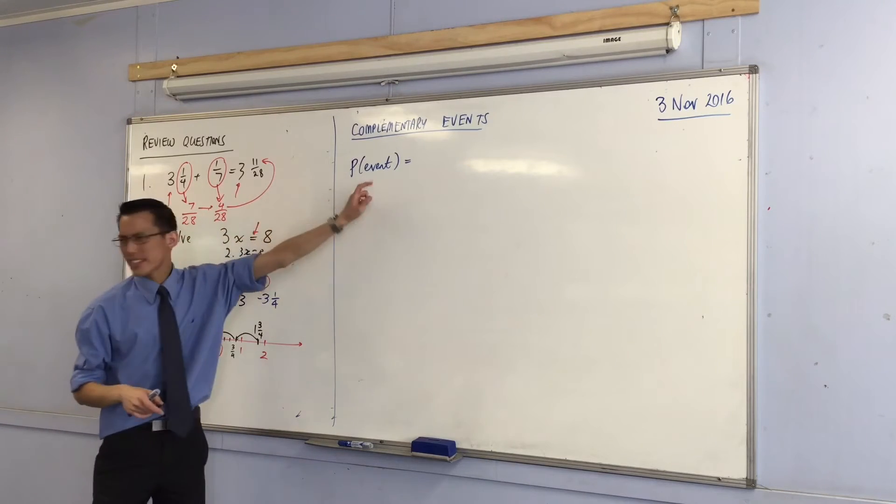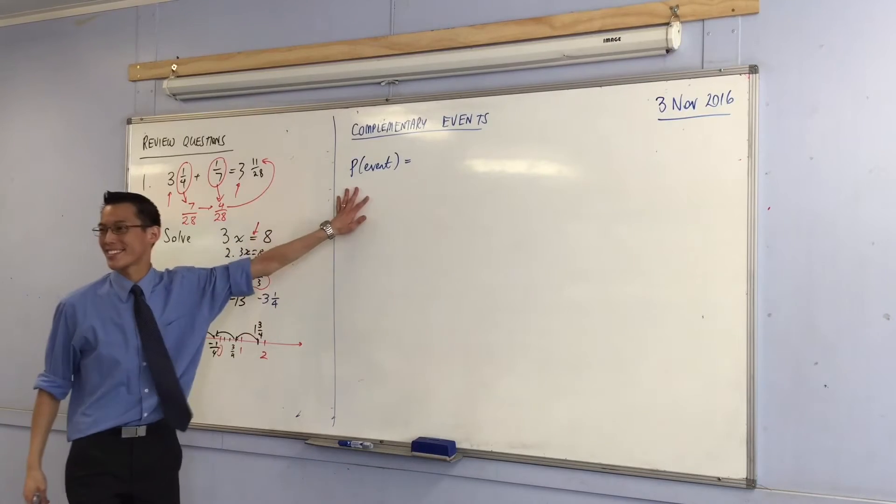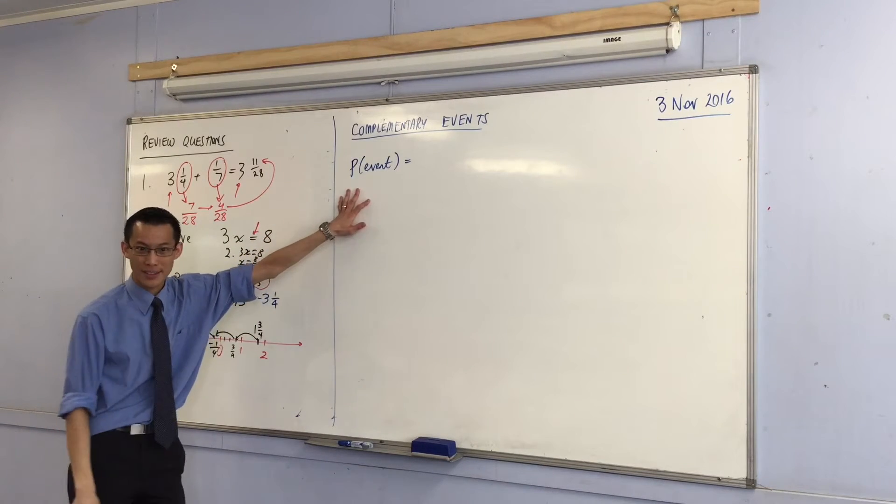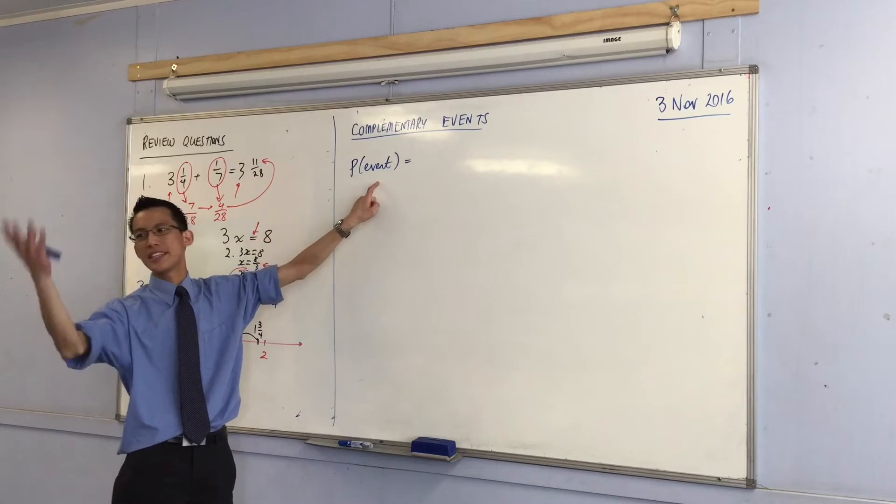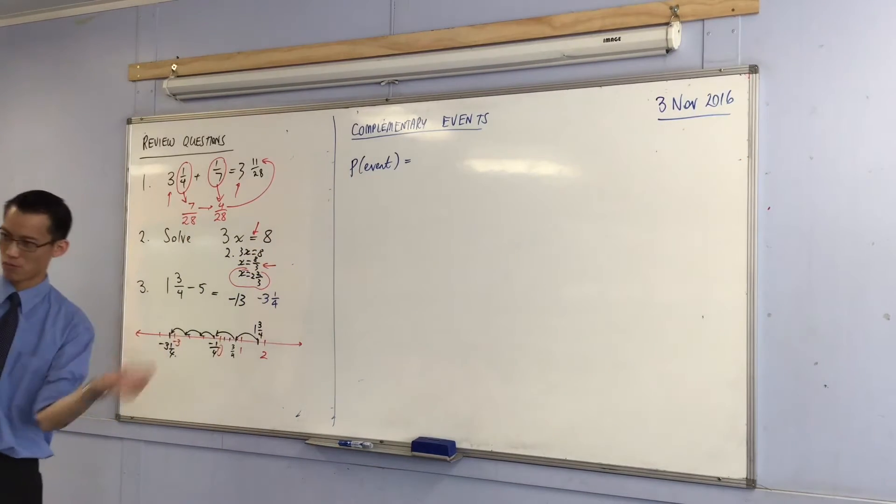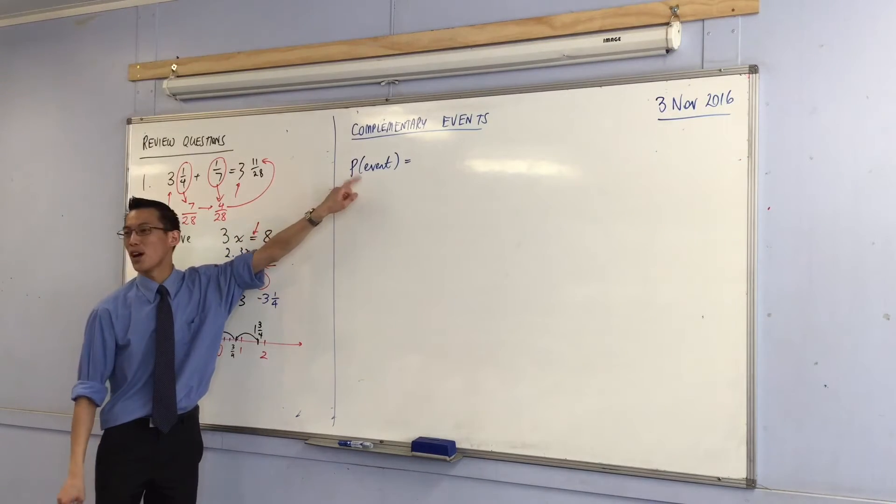When you see this, what does this mean? How would you read this out? Christian? Probability of a particular event. Whatever you like - dealing out the two of hearts, rolling a six, getting killed by Voldemort, that kind of thing. Probability of an event.